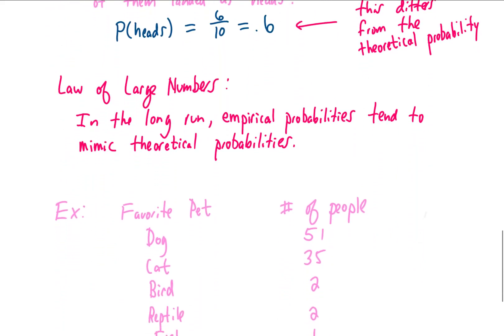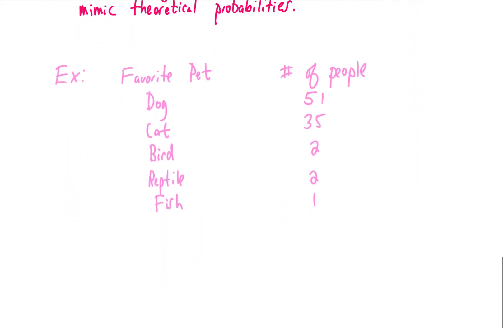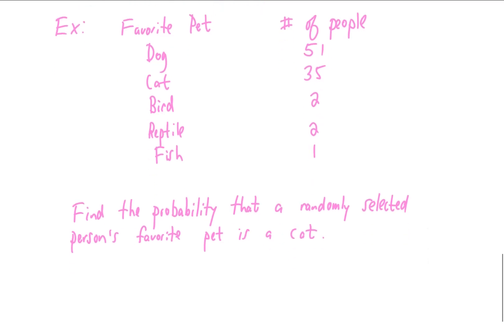Let's do one more example of an empirical probability. Here we had a survey where we asked people what their favorite pet was, and we got these responses. 51 people said dog, 35 said cat, and so on. And we want to find the probability that a randomly selected person's favorite pet is a cat. So I'm going to write this as the probability of cat. And given our data, the number of people that chose cat was 35. And to find our empirical probability, we have to divide by the total number of people surveyed here. So if we add all these numbers up, I'm getting that there were 91 people surveyed. So the probability that a randomly selected person is going to choose cat based on this data is 35 divided by 91, which is approximately 0.385 or a 38.5% chance.